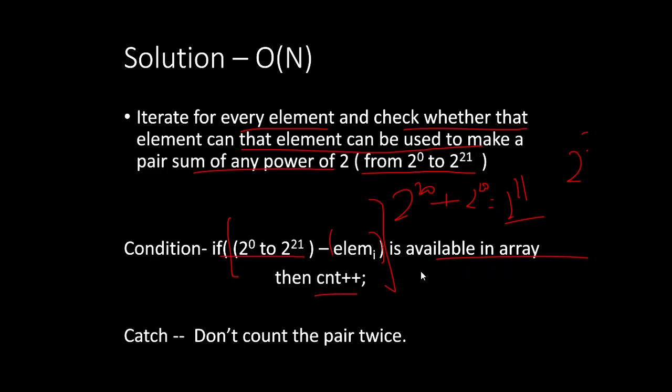There is a catch in this solution. While doing this, we need to make sure that we cannot count the pair twice. The same pair cannot be counted twice, or that will give the wrong answer. Let's see the code and it will be more clear.